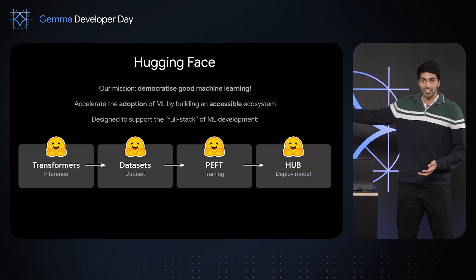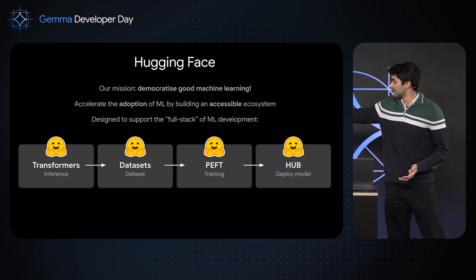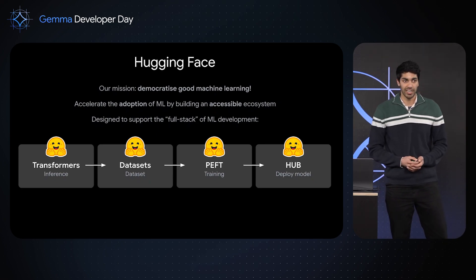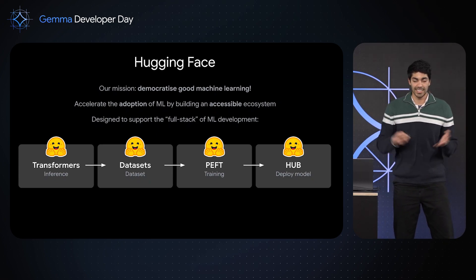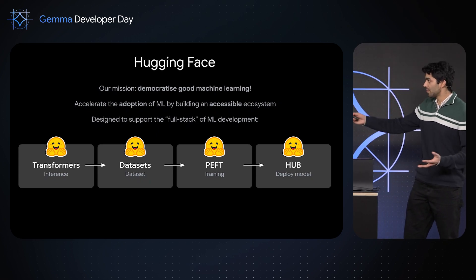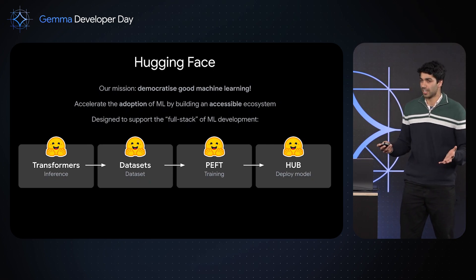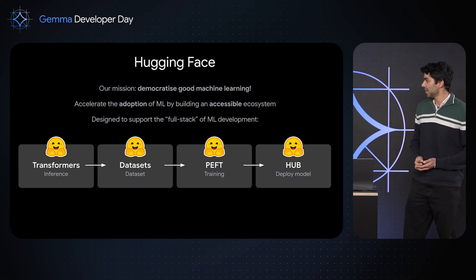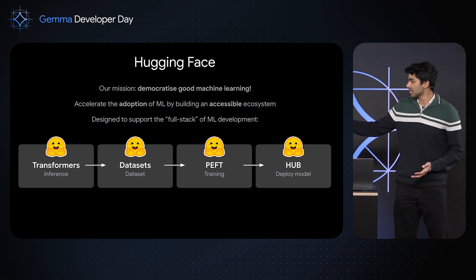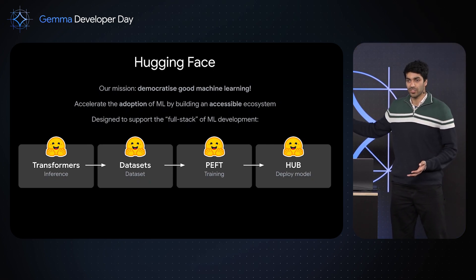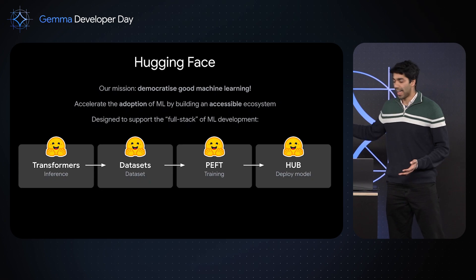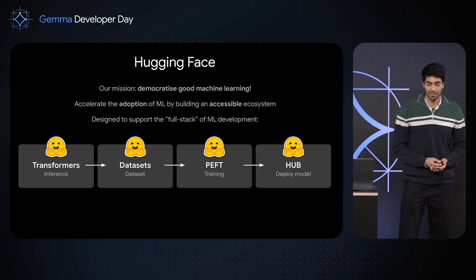Hugging Face's mission is to advance and democratize machine learning through open source and open science. What started off as a library for state-of-the-art machine learning models has expanded to a full ecosystem to cater for the full machine learning pipeline — not just models, but datasets, training, and the Hugging Face Hub.